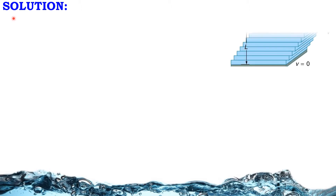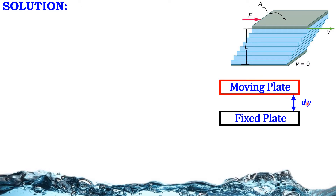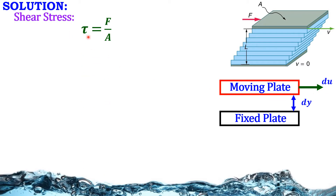Solution. This is our fixed plate. The distance between the fixed plate and moving plate is dy, and the moving plate moves at a velocity of du. Shear stress tau is equal to force by area. They are given F as 100 N and area as 0.81.